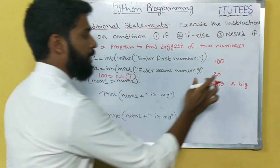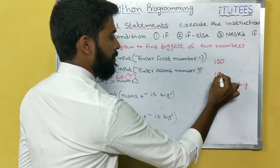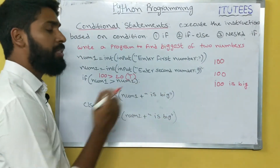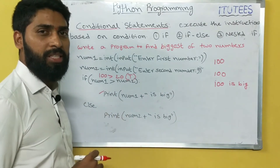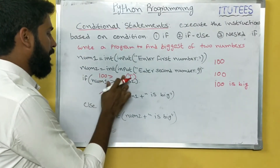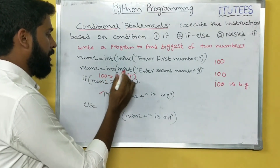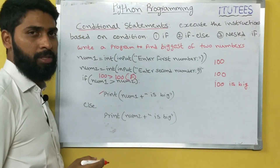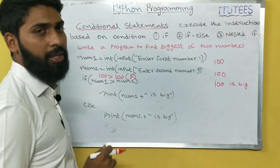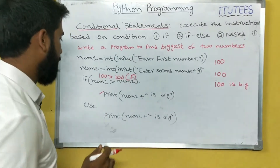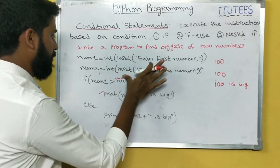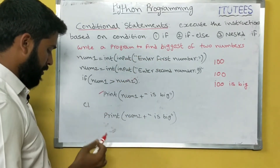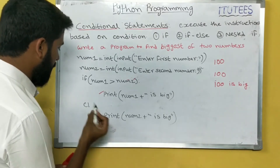If I enter both numbers as the same — for example 100 and 100 — it actually prints 'number2 is bigger', but here 100 greater than 100 is false, so it prints '100 is big', which is incorrect.